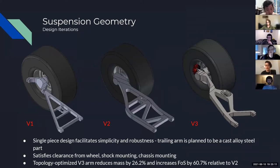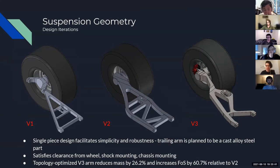Our design went through a series of iterations. First we looked at a slightly different geometry using two separate arms to have additional control over wheel positioning. We found that introduced unnecessary wheel position change over the travel and generally made the system less robust with more moving components. We moved to a single arm that rigidly fixed the translational position of the wheel, and as that was a heavy component, we performed topology optimization to develop a third iteration.